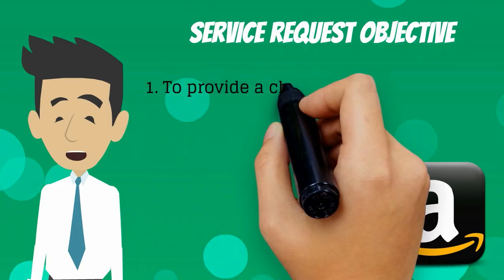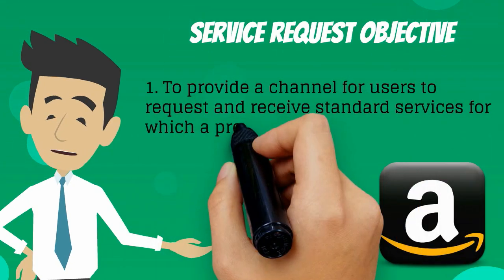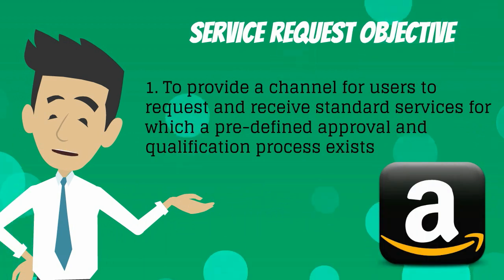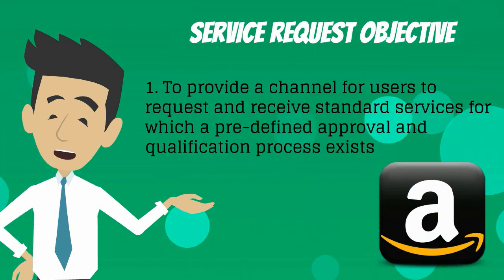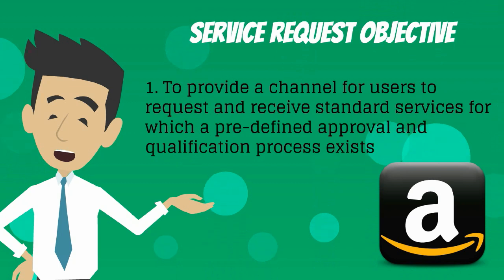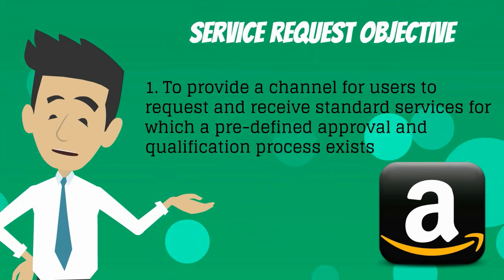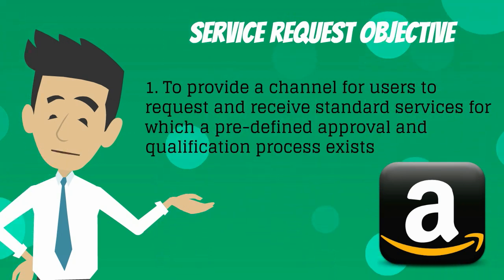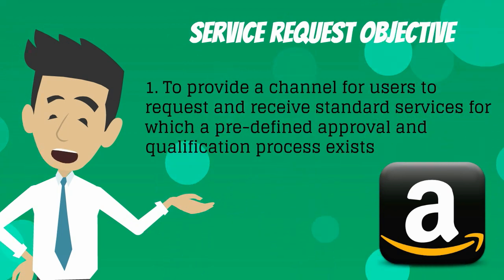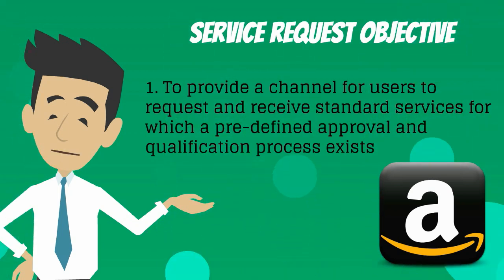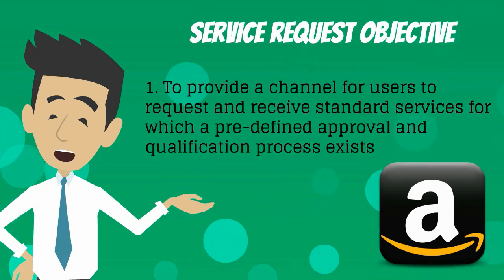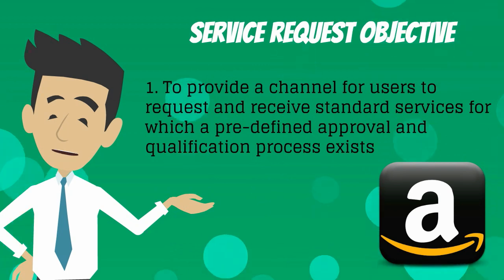What is the objective of request fulfillment process? Objective 1: To provide a channel for users to request and receive standard services for which a predefined approval and qualification process exists. For example, ordering a new item on Amazon is a service request — Amazon provides an online shopping service and we are requesting that service for a new item.